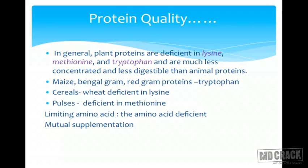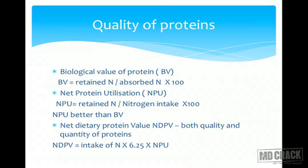A mnemonic to remember: pulses are deficient in methionine (PM). The amino acid that a protein is deficient in is called the limiting amino acid. This can be overcome by mutual supplementation — combining a cereal with a pulse gives both lysine and methionine, covering the deficiencies of each.